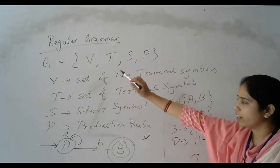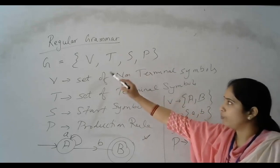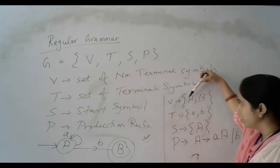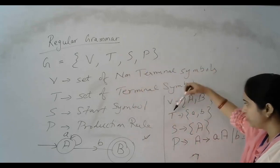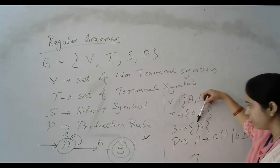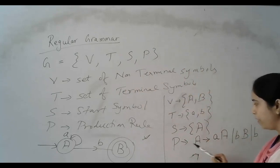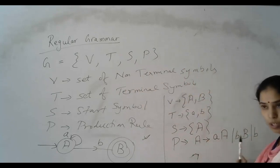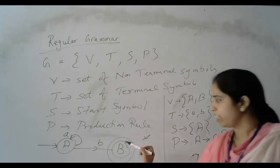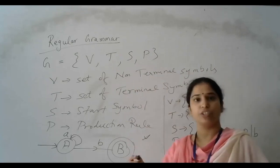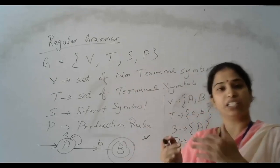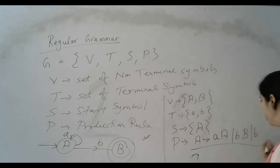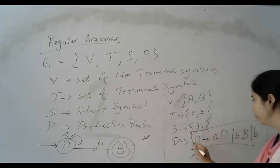Let G be a grammar. So G is a set of V, T, S, P. Where V is the non-terminals, T are the terminals, S is the start symbol, and P is the production rule. This grammar is called a regular grammar. This is our grammar — in short form, we call it a grammar.